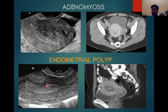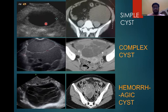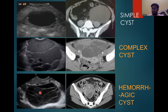Endometrial polyp is a hyperechoic mass that characteristically interrupts the endometrial line interface. The surface is generally thin, measuring 3 to 8 cm in size. In cystic cases, there is a simple fluid-density cyst of less than 50 HU. Complex septation of the cyst is present. Hemorrhagic cysts show internal septation and multiple reticulations.